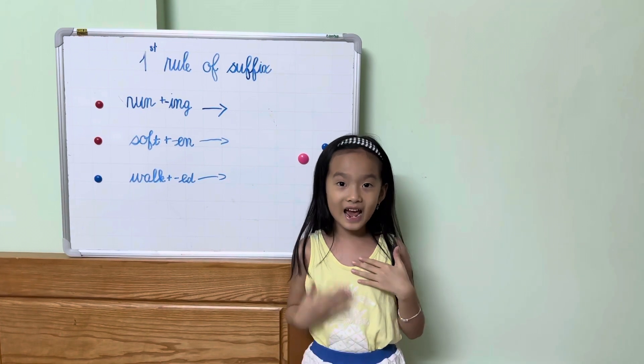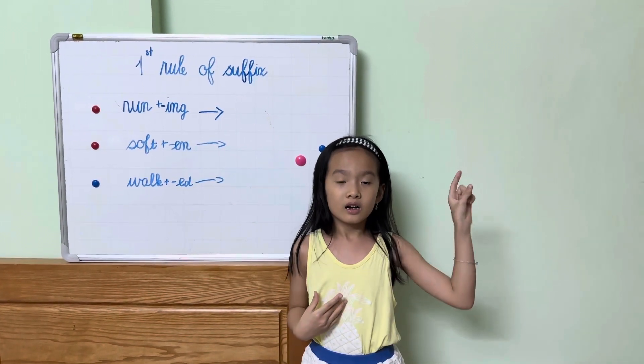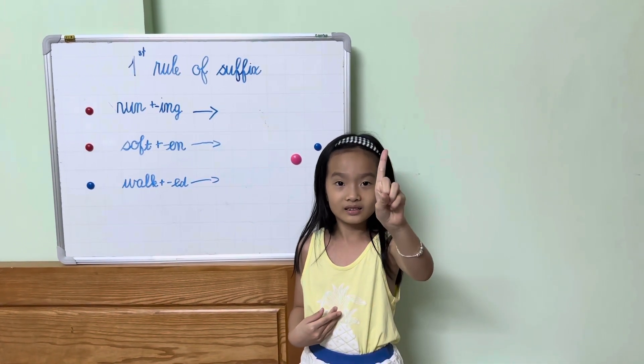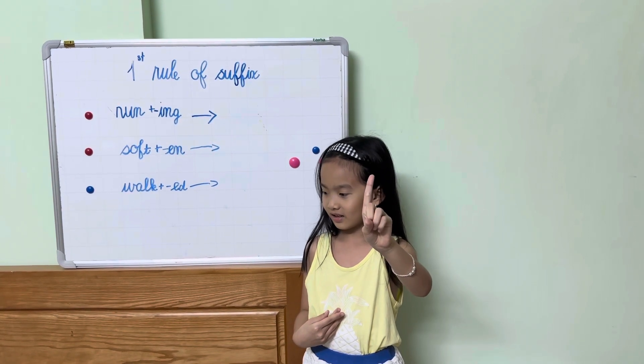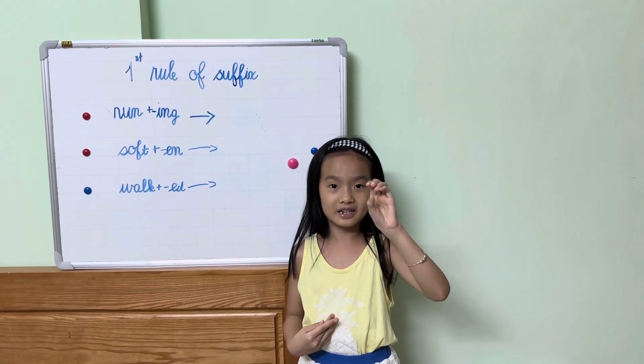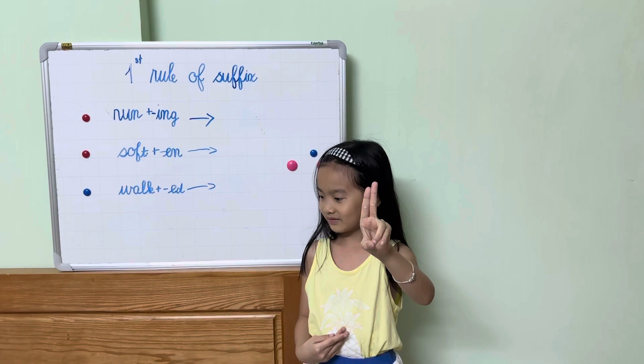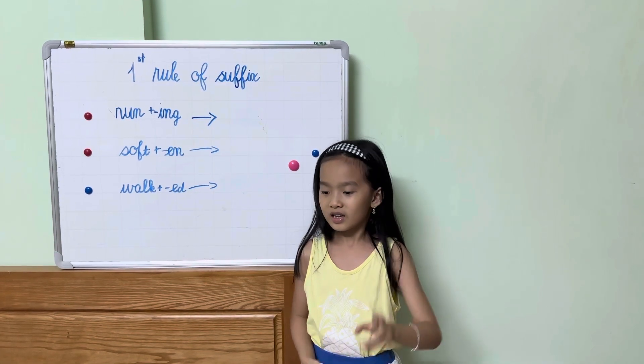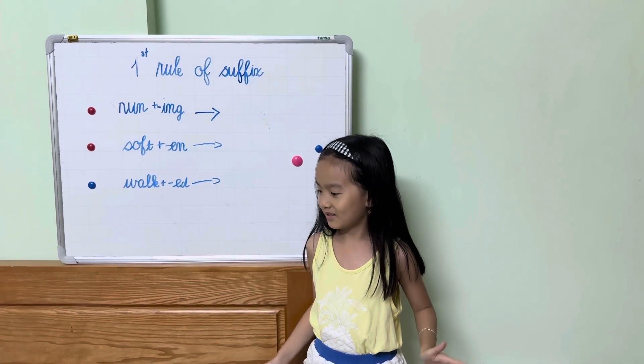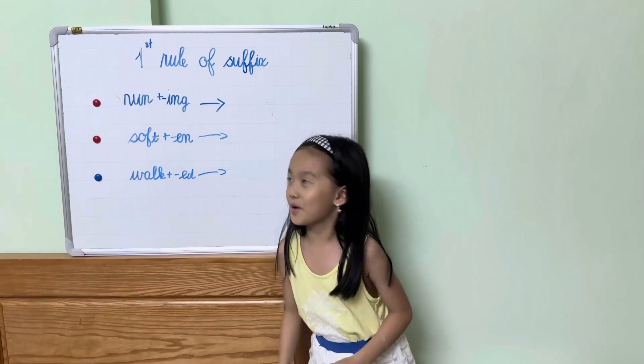Now it's your turn. Let's do it with me. Short vowel, one consonant, suffix begins with the vowel, you double it. Very good, my students.